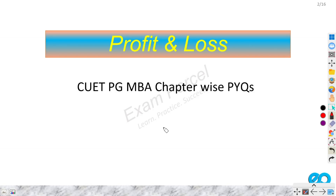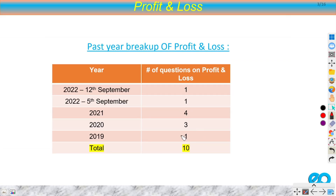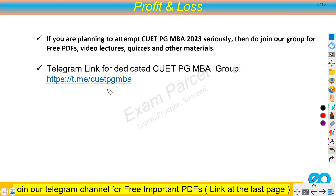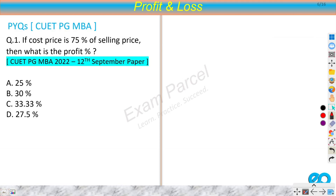Hey everyone, in this video we'll discuss all the previous questions on the profit and loss chapter from CVT-PGMBA past year papers. In 2022 we had two papers with one question each, in 2021 we had the maximum — 4 questions, in 2020 we had 3, giving a total of 10 questions from the last five year papers. There is also a dedicated Telegram group for CVT-PGMBA; the link is in the description. Let's start the questions now.